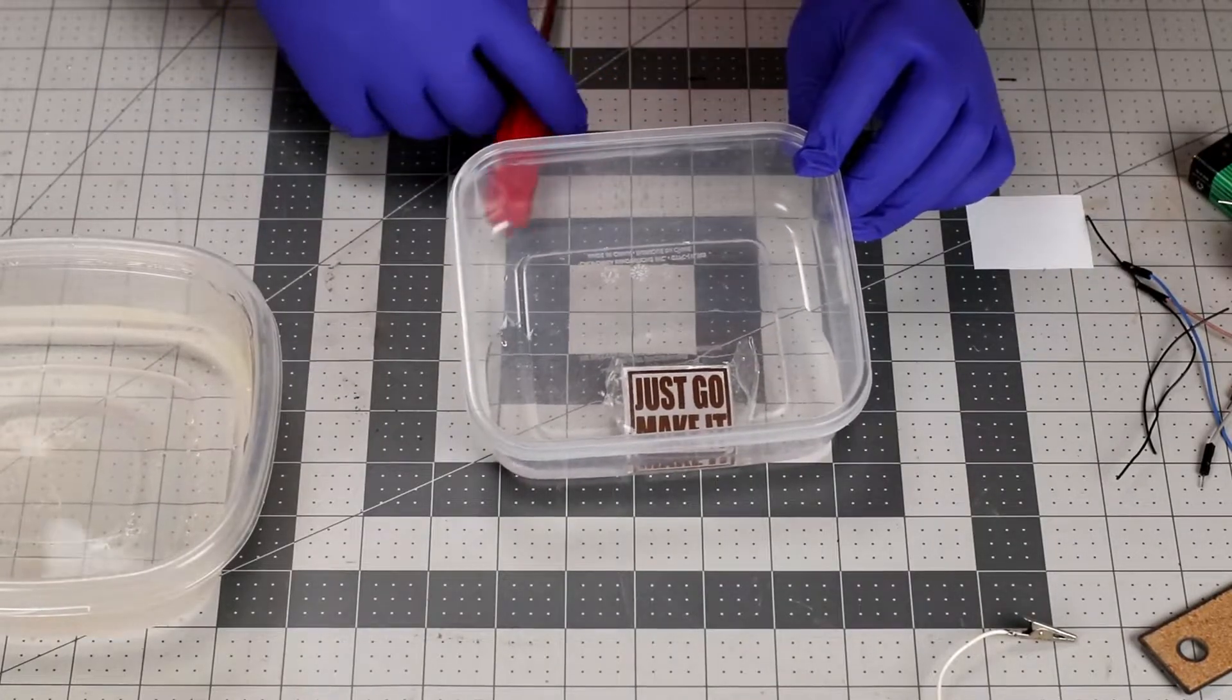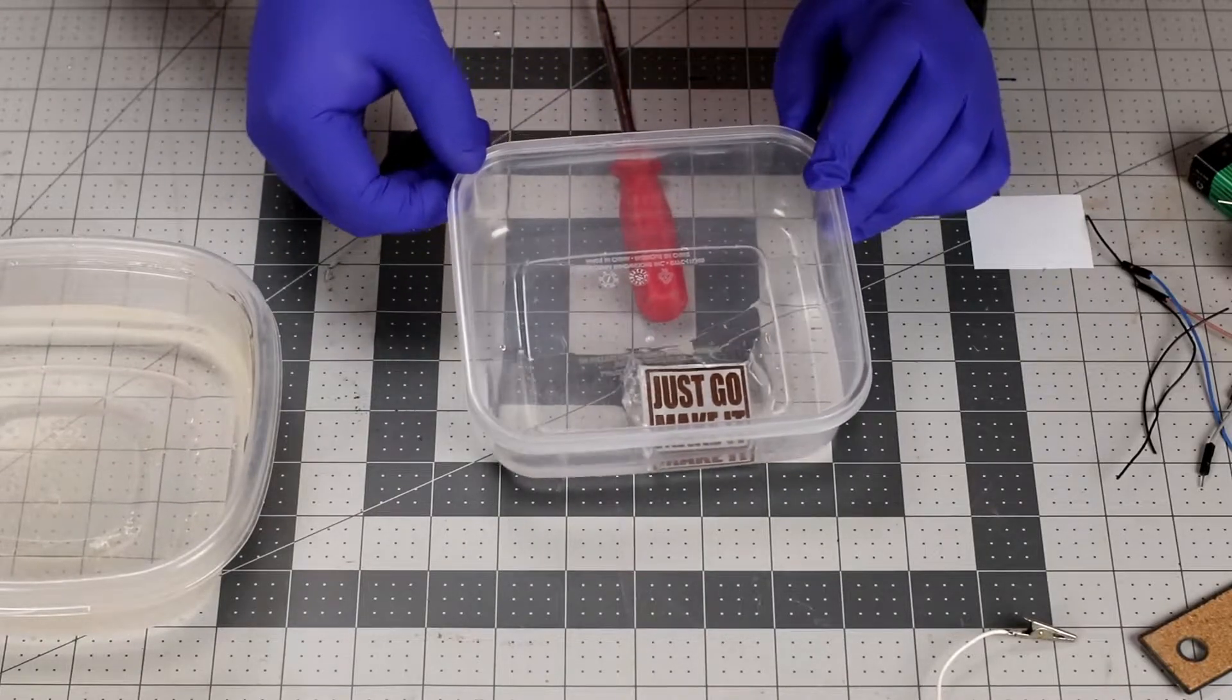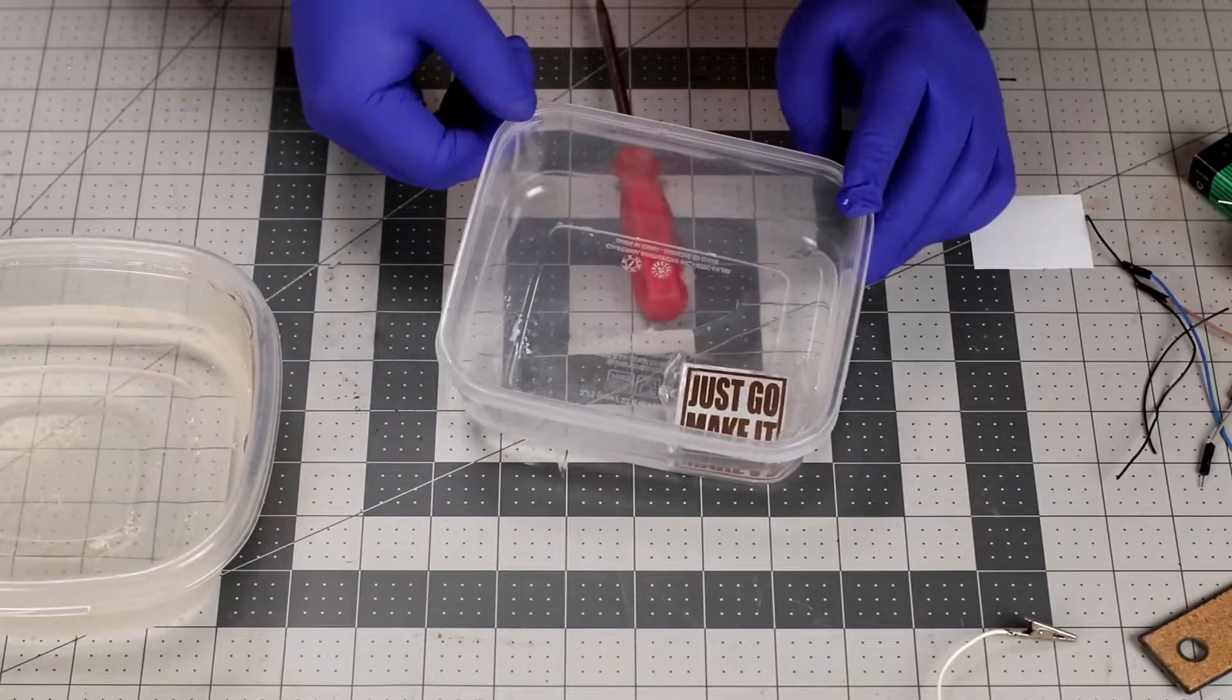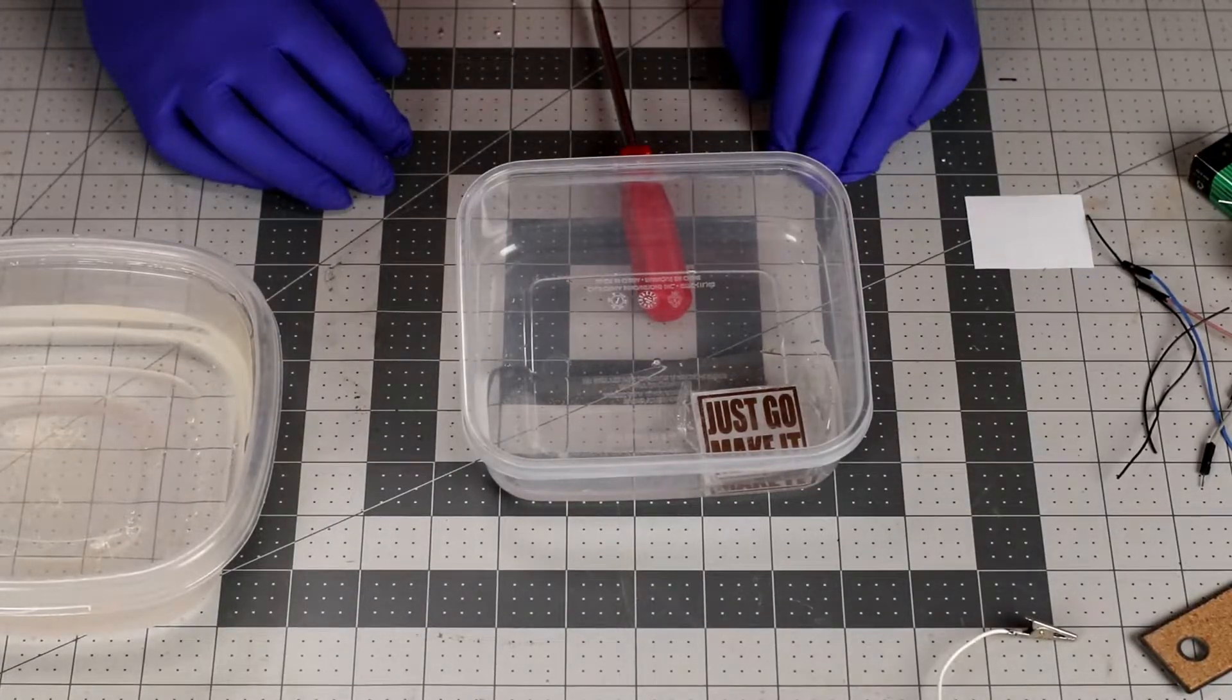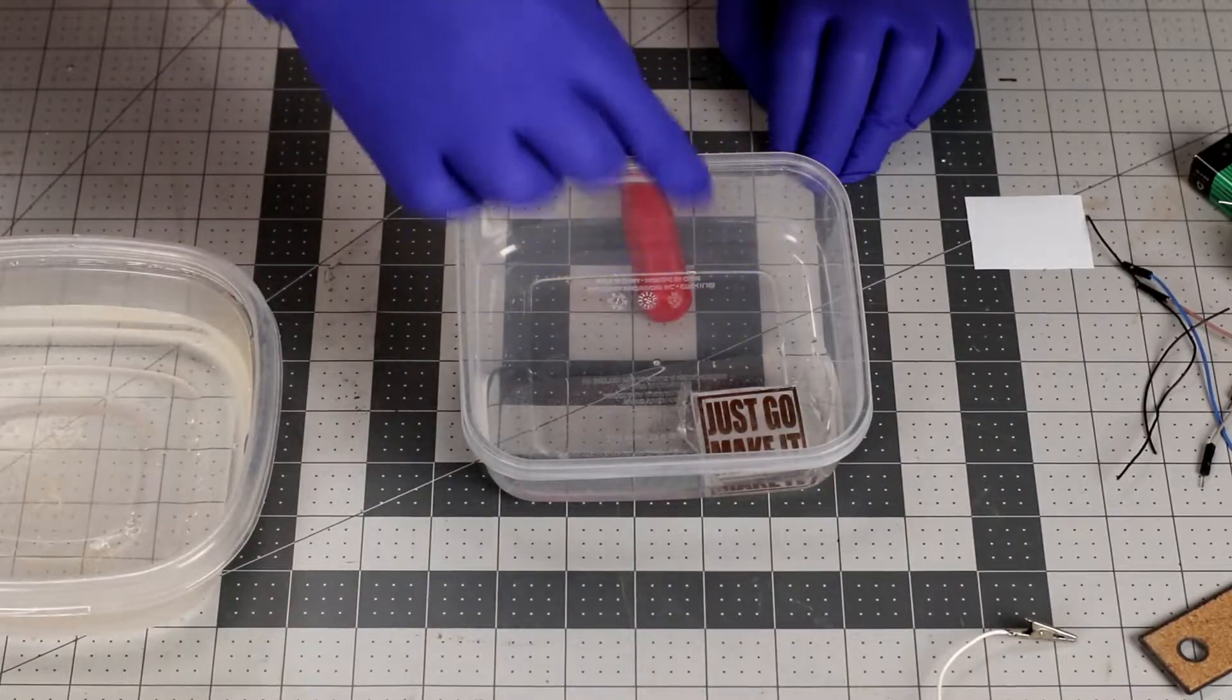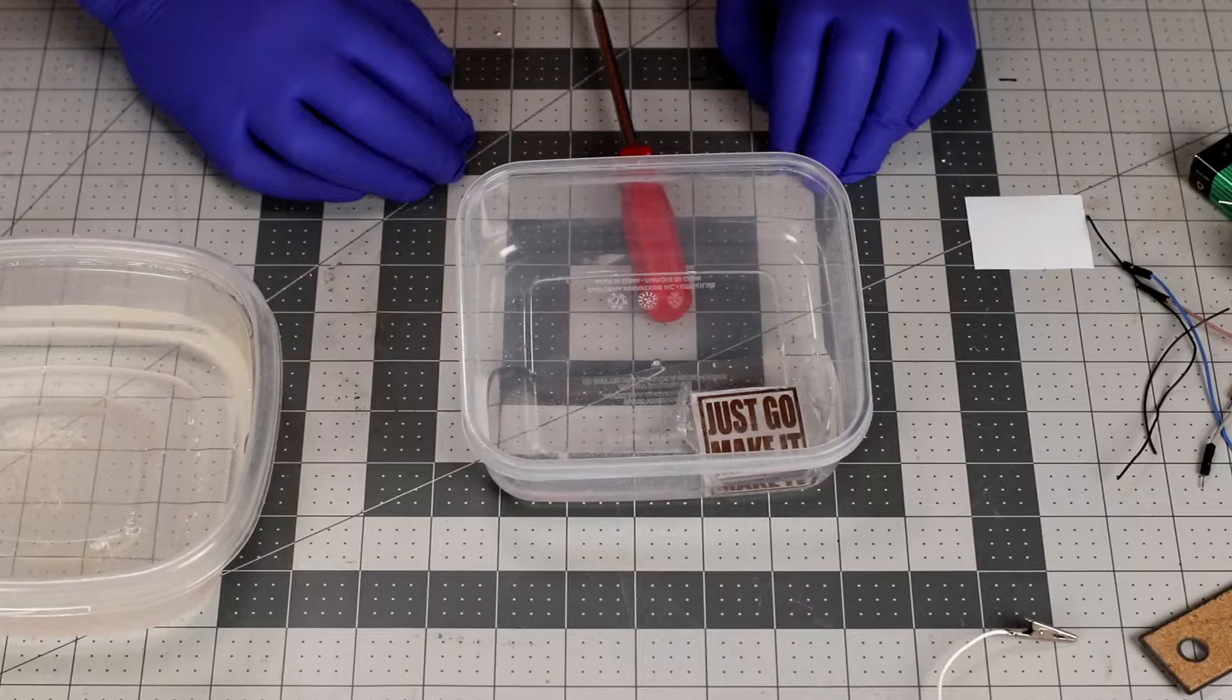I put it down into my etching solution here and I'm going to kind of tilt it up a little bit, just to make sure it's good and covered. And I'm starting to see some fine bubbles come off of it. You can probably see the top of it turn black. So I'm going to come back in a few minutes and see how it looks.